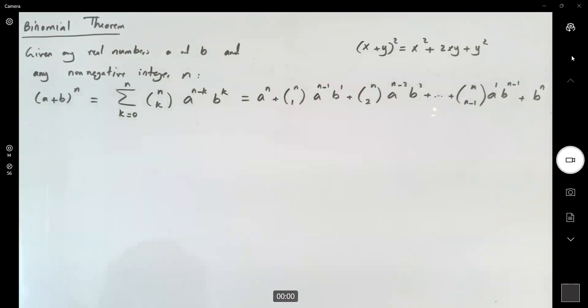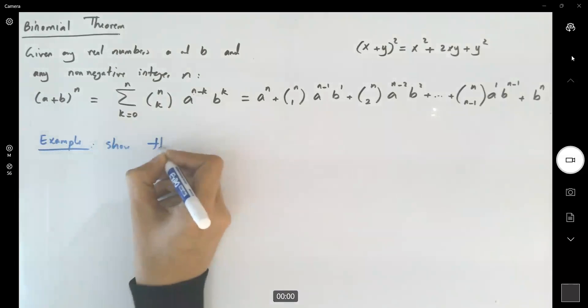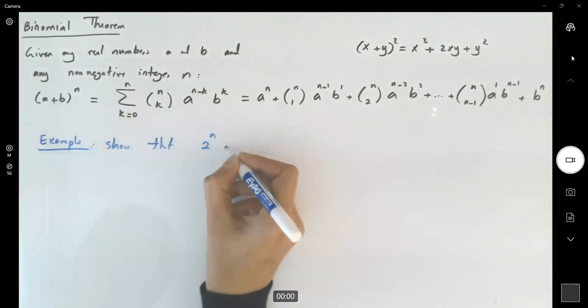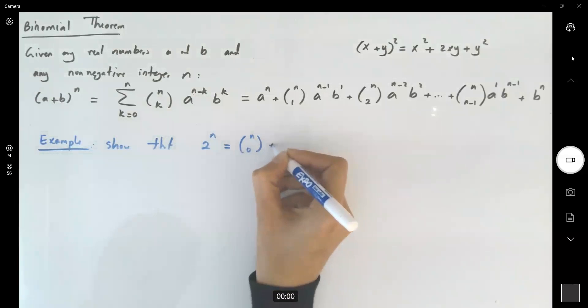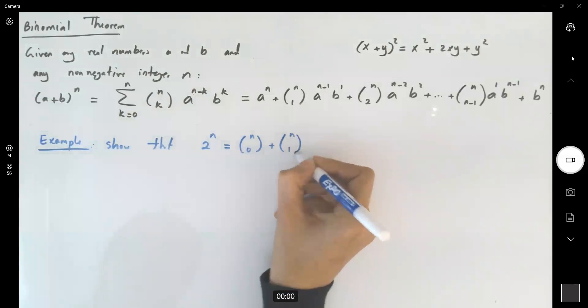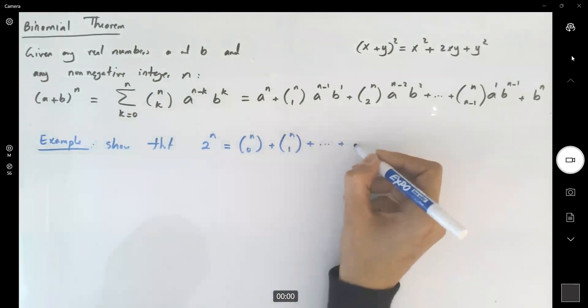Let's go over a quick example here. This example says show that 2 to power n can be written as the combination of 0 of n, plus the combination of 1 out of n, the rest of the terms, the middle terms, the combination of n out of n.